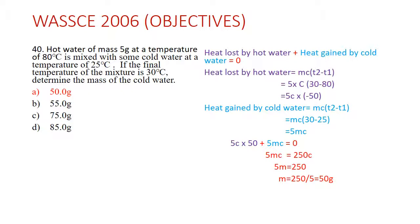Question 40: Hot water of mass 5 grams at a temperature of 80 degrees Celsius is mixed with cold water at 25 degrees Celsius. If the final temperature of the mixture is 30 degrees Celsius, determine the mass of the cold water. The answer is 50 grams. The law we use is that heat is conserved: heat loss by hot water plus heat gain by cold water equals zero. Alternatively, heat loss by hot water equals heat gain by cold water.